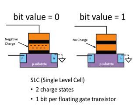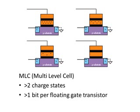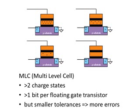But this isn't the only approach. Another approach is to have more than two charge states — here I've shown four, but it could be three or more than four. This is the approach taken by MLC, or multi-level cell flash memory. Since there are more than two charge states, there's more than one bit encoded per floating gate transistor, so this allows for higher storage density. But there is a downside, which is that the tolerances are smaller. This is because the charge states are closer together, so you need smaller tolerances to be able to distinguish them, and this results in more errors.